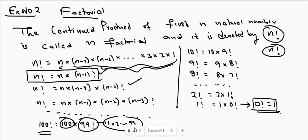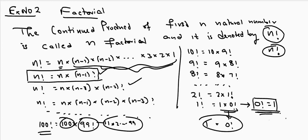Now, 2! = 2 × 1!, and 1! = 1 × 0!. Since 1! is known to be 1, we get 1 × 0! = 1, which means 0! = 1. Therefore, 0 factorial is equal to 1.